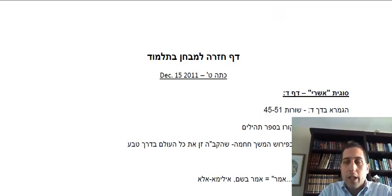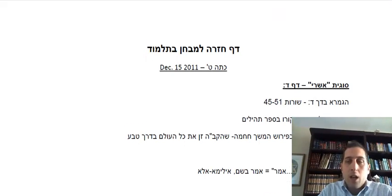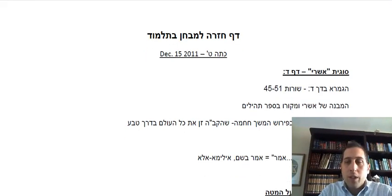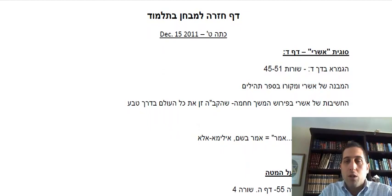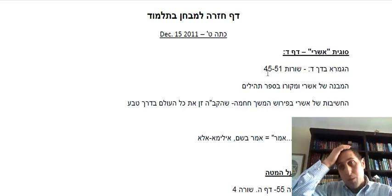The first thing is the Asherah unit. The Gemara in Daf Dalim Abed — those lines about Asherah — that's all in the booklet.